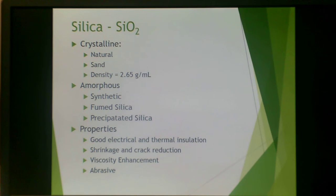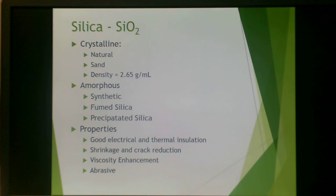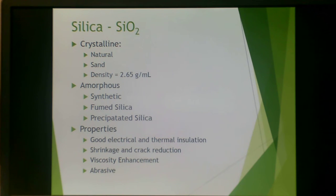Silica itself is inorganic SiO₂, and it can be either crystalline or amorphous. The crystalline form is generally natural — what we think of as sand — with a relatively high density of 2.65 g/mL. There are also a variety of amorphous silicas, which are synthetic; these can be either fumed silica or precipitated silica, with surfaces that can be either treated or untreated. They provide good electrical and thermal insulation, good shrinkage and crack reduction, viscosity enhancement, and abrasive properties.